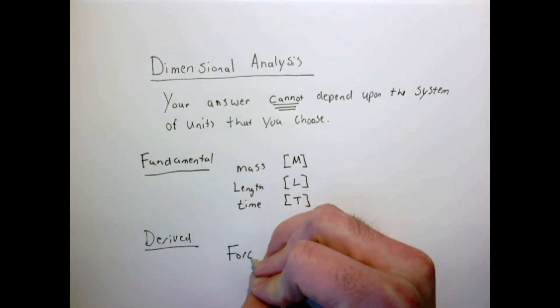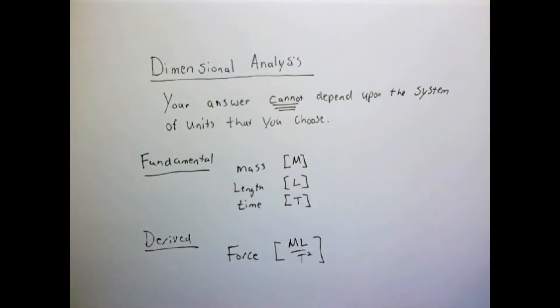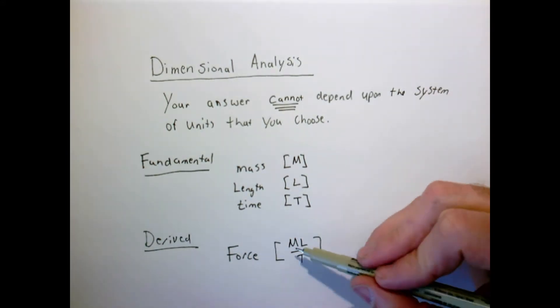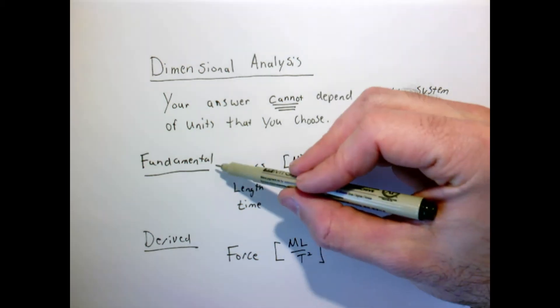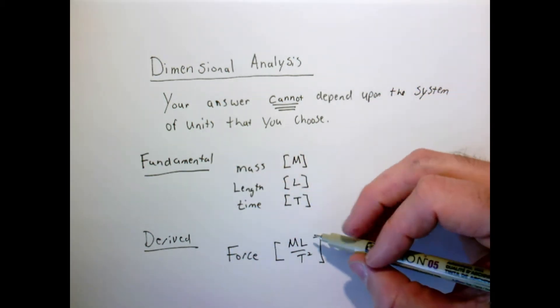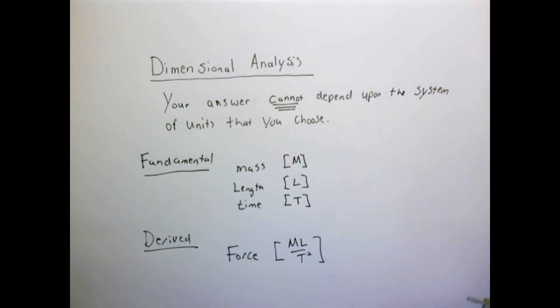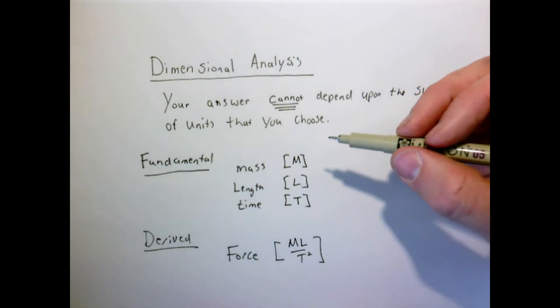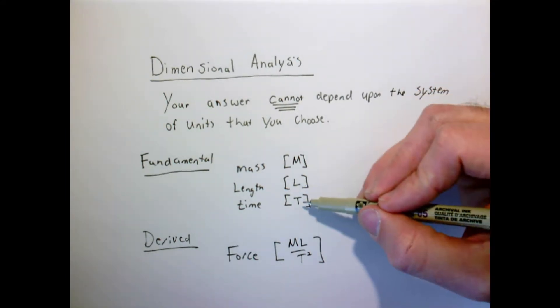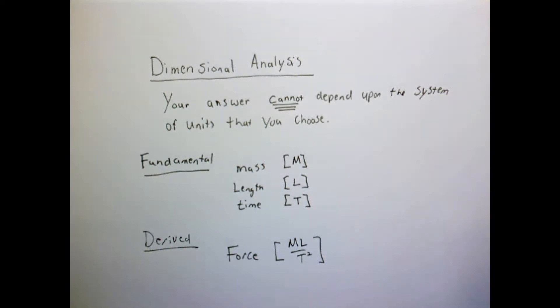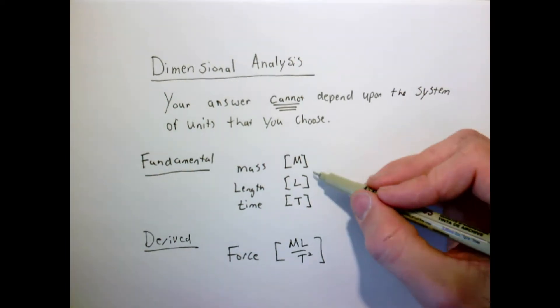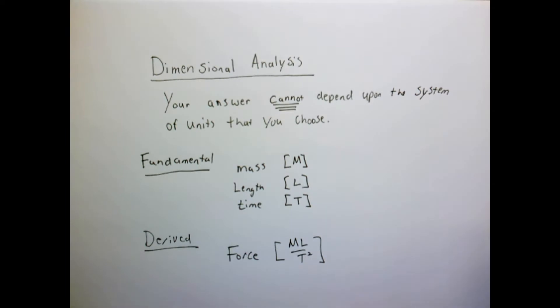An example of a derived unit from these would be force, ML over T squared, mass times acceleration. Now of course this distinction between fundamental and derived is a little bit arbitrary. I could move force up here and mass down here, for example. There's nothing stopping me from doing that, but I find it easiest to think of mass, length, and time as our fundamental ones and everything else derived. These units here will be sufficient for problems in mechanics. For thermal problems we might need to think about temperature, but let me hold off on that discussion for now.